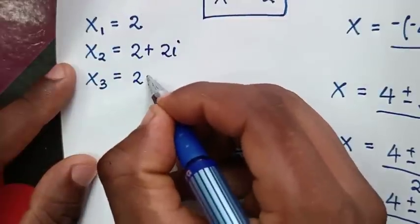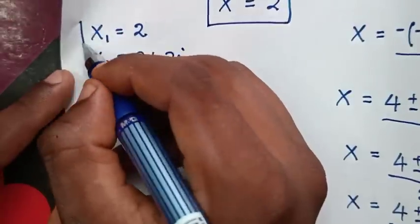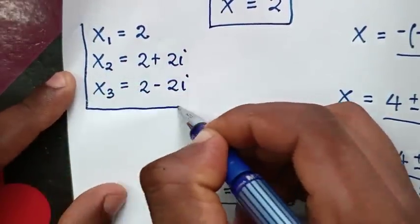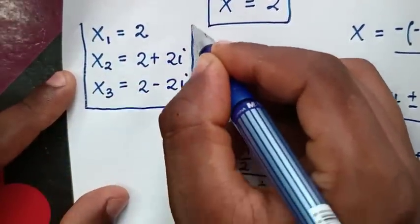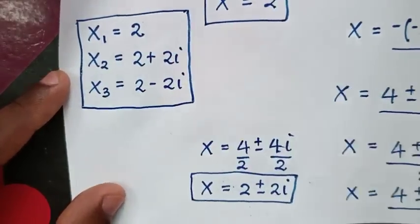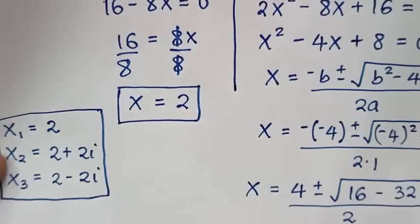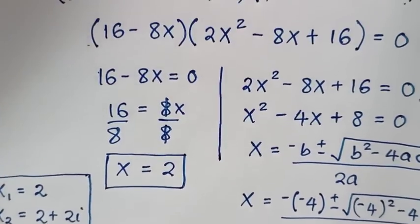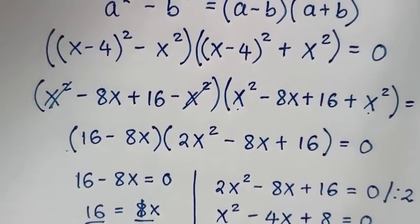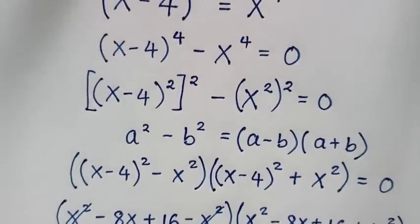So these are all the values of x in this problem: x equals 2 (the real solution), x equals 2 plus 2i, and x equals 2 minus 2i (the complex solutions). Don't forget to follow these steps. Subscribe to my channel and see you in the next video.